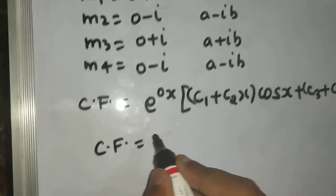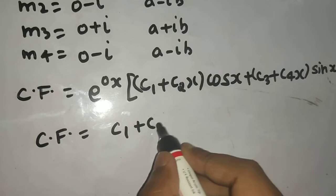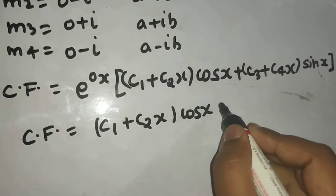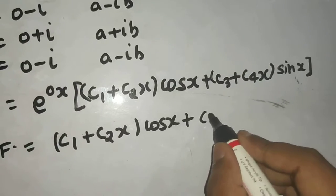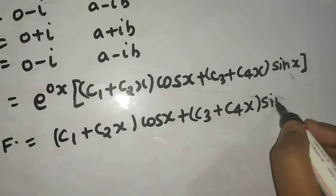We can further simplify this and write because e power 0x is 1. So c1 plus c2x times cos x plus c3 plus c4x times sin x.